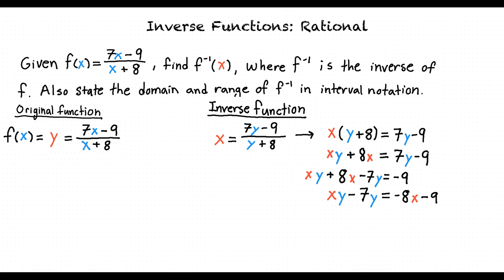Finally, we will be able to completely isolate y to one side of the equation by factoring out y from xy minus 7y. Doing so, we will get y times x minus 7 is equal to negative 8x minus 9. We can then divide both sides of the equation by x minus 7 to get our final inverse function of y is equal to negative 8x minus 9 over x minus 7.